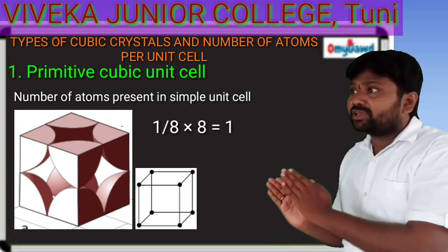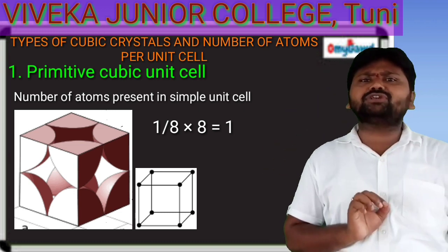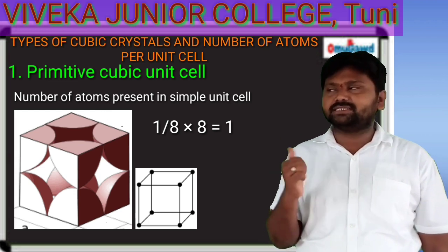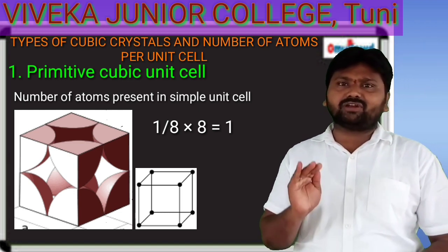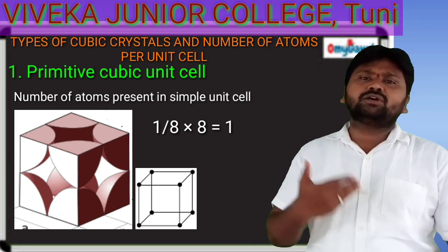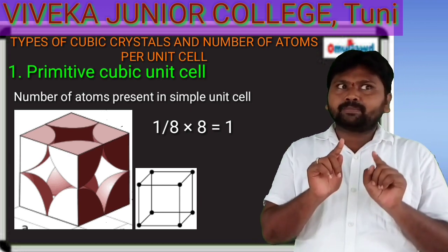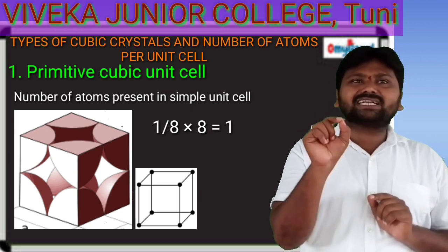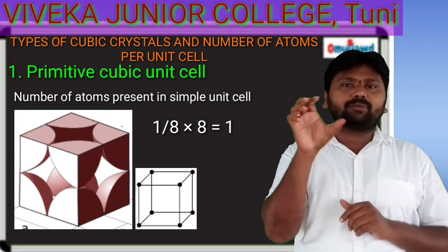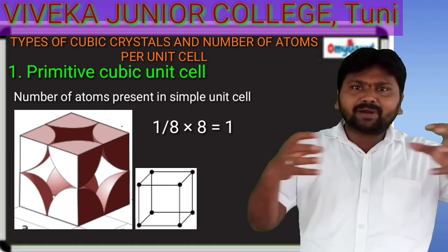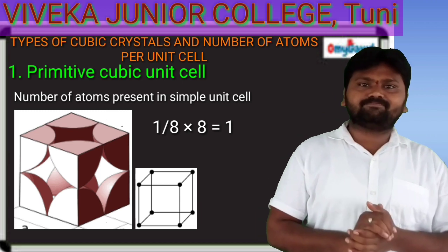In the simple cubic unit cell, there are 8 corners and each corner atom contributes 1/8. So 8 × (1/8) = 1. The number of atoms per simple cubic unit cell is equal to 1. Each atom at a corner is 1/8 part of that unit cell.